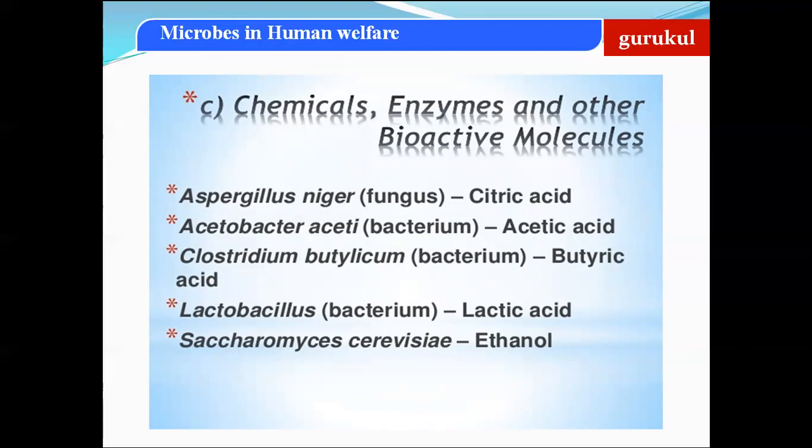The third industrial product is the production of chemicals, enzymes, and other bioactive molecules. Important chemicals produced using microbes include: citric acid by Aspergillus niger, acetic acid by Acetobacter, butyric acid by Clostridium butyricum, lactic acid by Lactobacillus, and ethanol by Saccharomyces cerevisiae. This is an important topic for competitive exams.